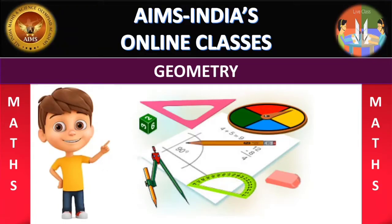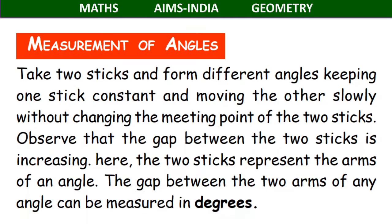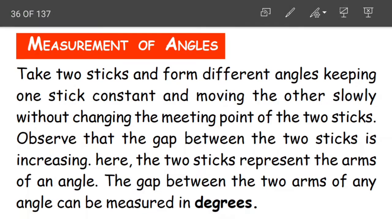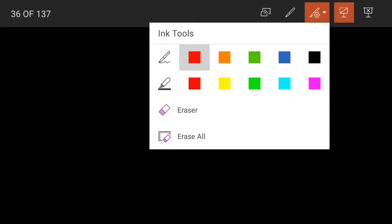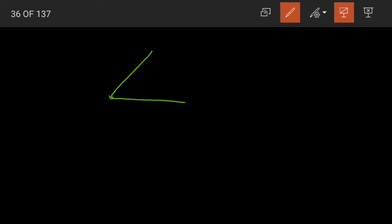Hello children, welcome to AIMS India's online classes. So what did we learn in the previous class? We have learnt about what is an angle. When two sides meet at the vertex they form an angle. And also we have learnt about the different types of angles.